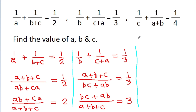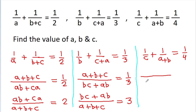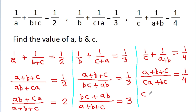The third equation is 1 by c plus 1 by a plus b is equal to 1 by 4. We get c times a plus b, which is ca plus bc, and a plus b plus c, so ca plus bc by a plus b plus c is equal to 4.